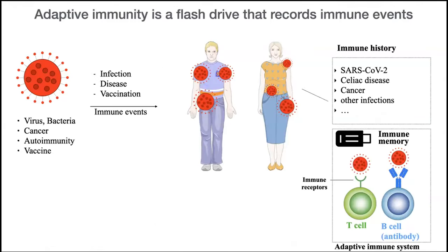I'll briefly introduce the adaptive immune system — something we all got to know quite well over the last years due to the pandemic. Once a virus, bacteria, cancer, or autoimmunity affects our body, the adaptive immune system is activated. It is mainly composed of B and T cells, which have B and T cell receptors that bind specifically to antigens.